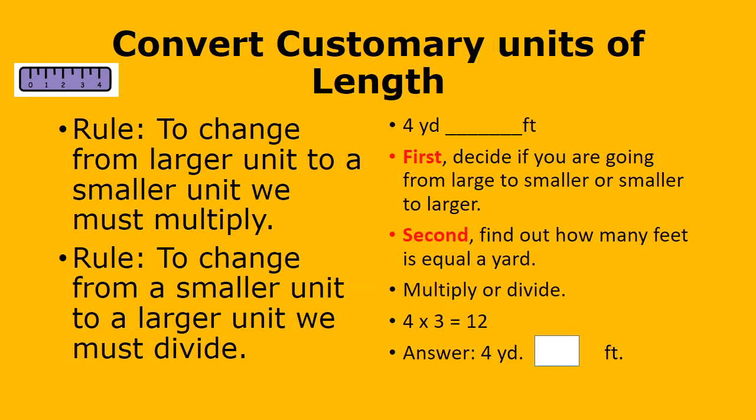The first problem is 4 yards equals blank feet. First we decide if we are going from larger to smaller or smaller to larger. We find out that 3 feet equals a yard, so we're going from larger to smaller — we multiply. 4 times 3 equals 12, and that will be our answer.